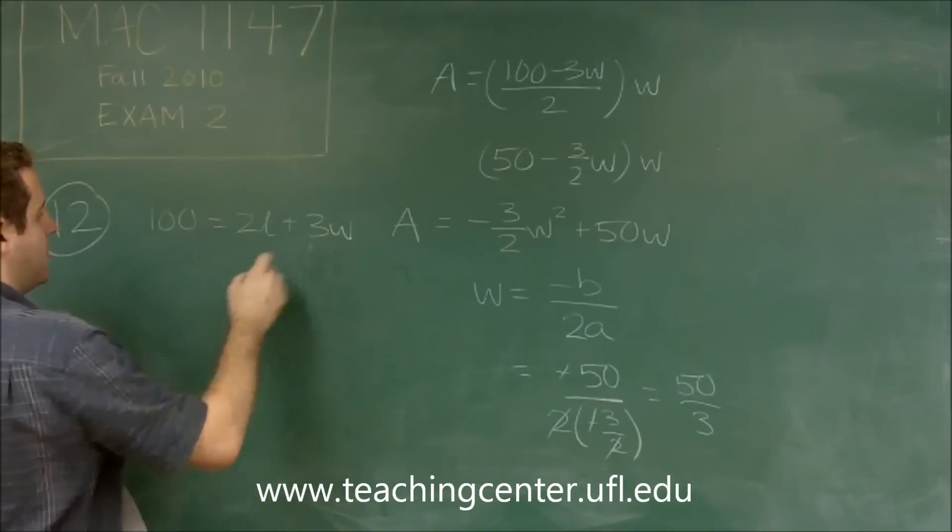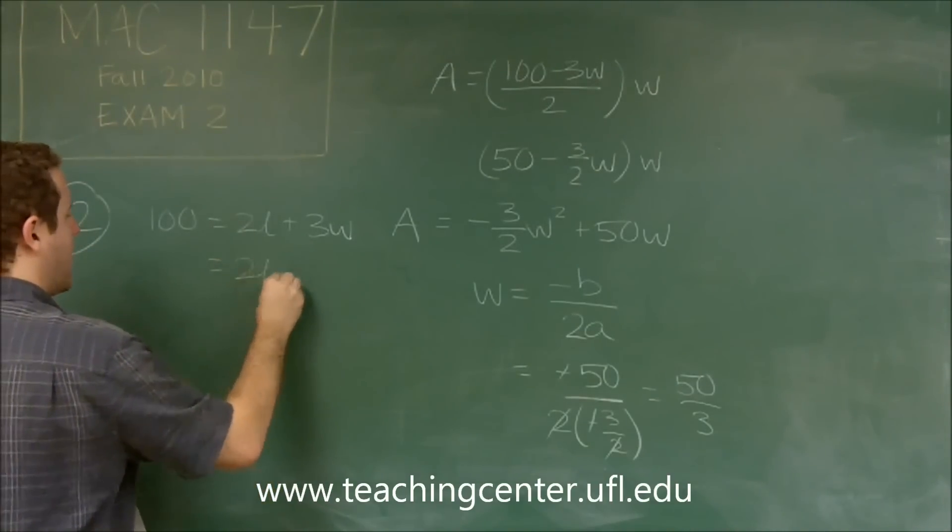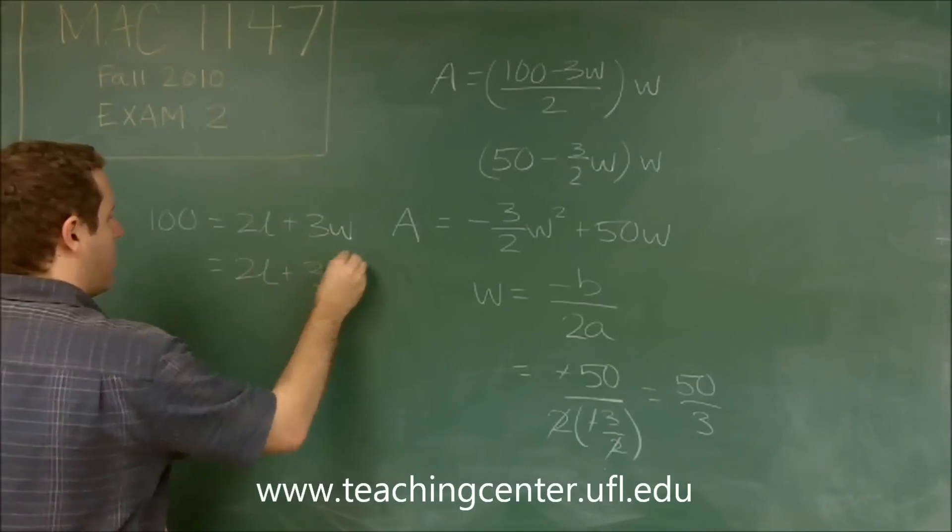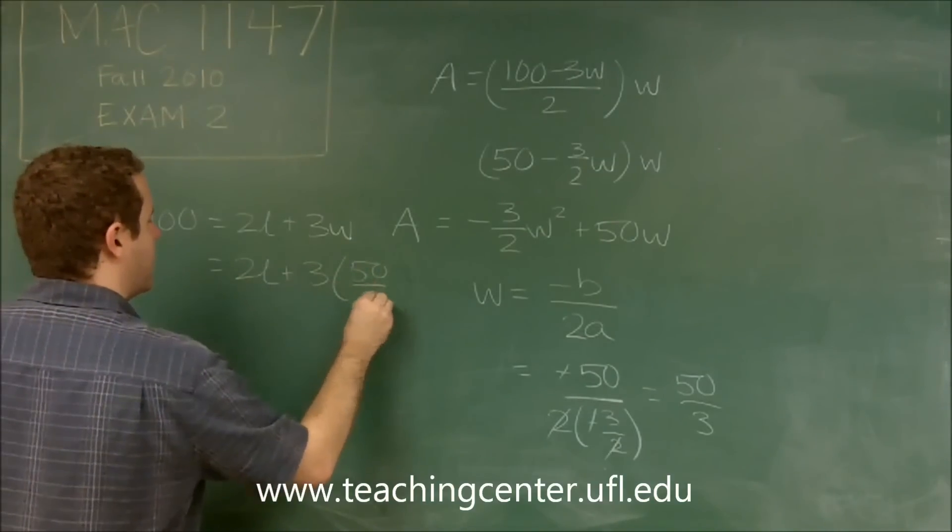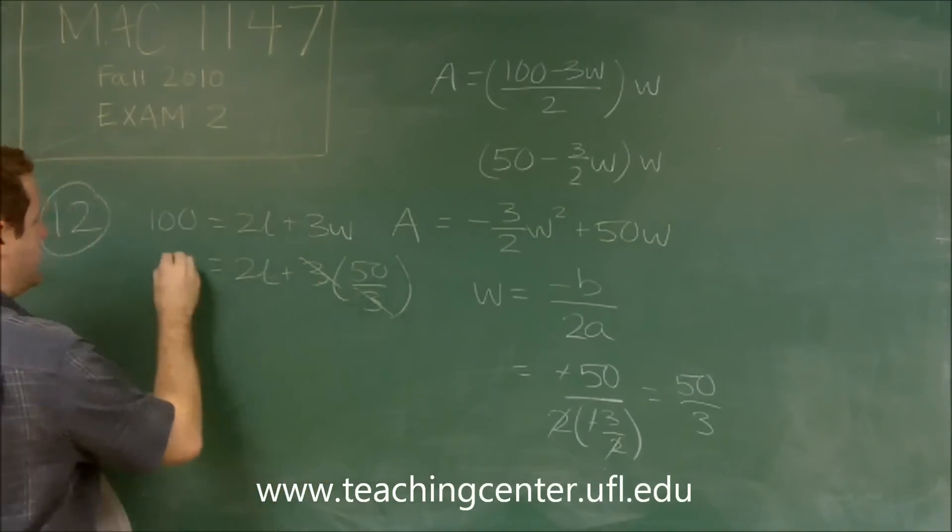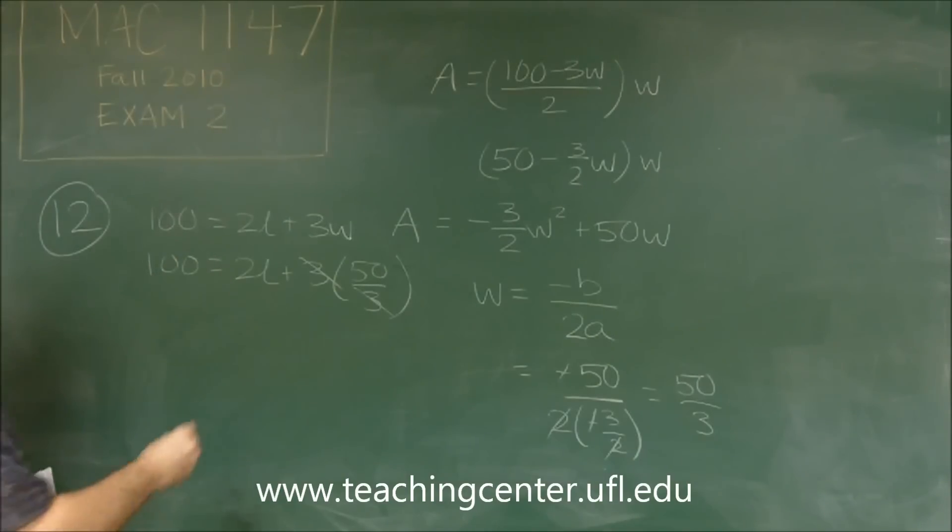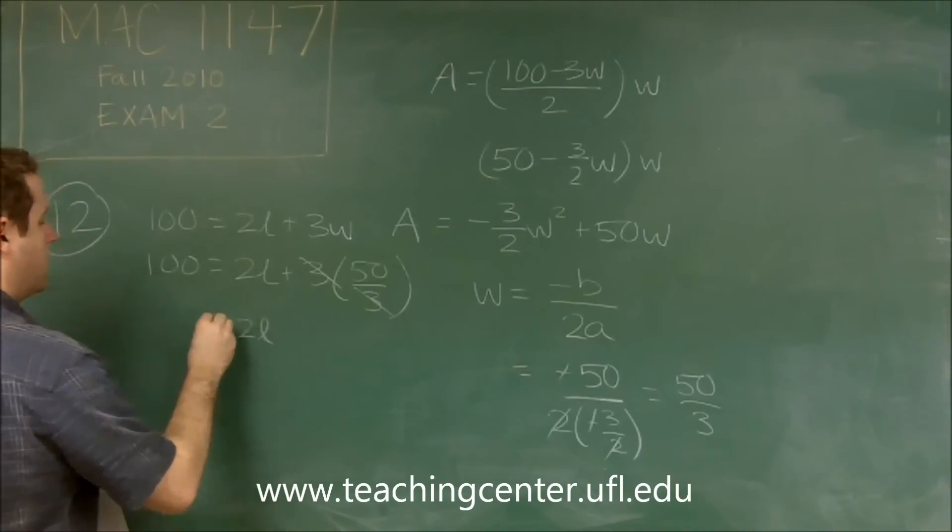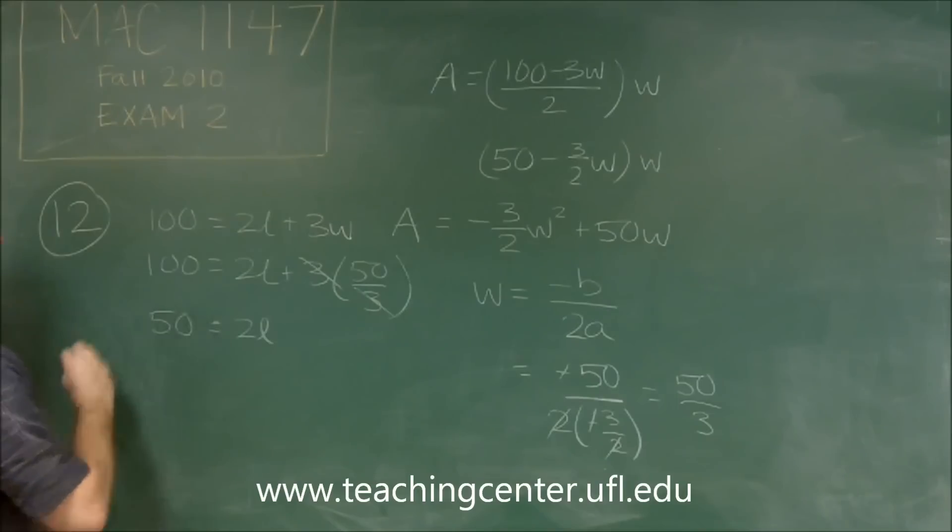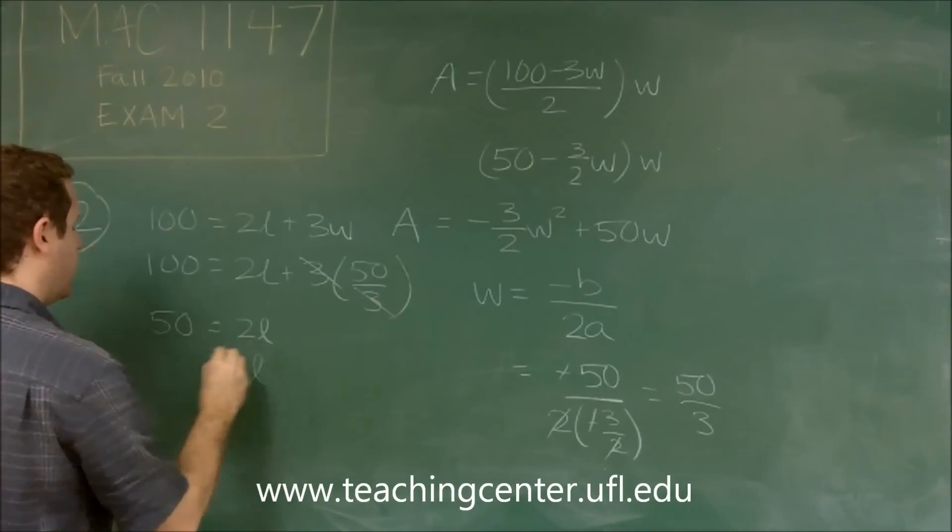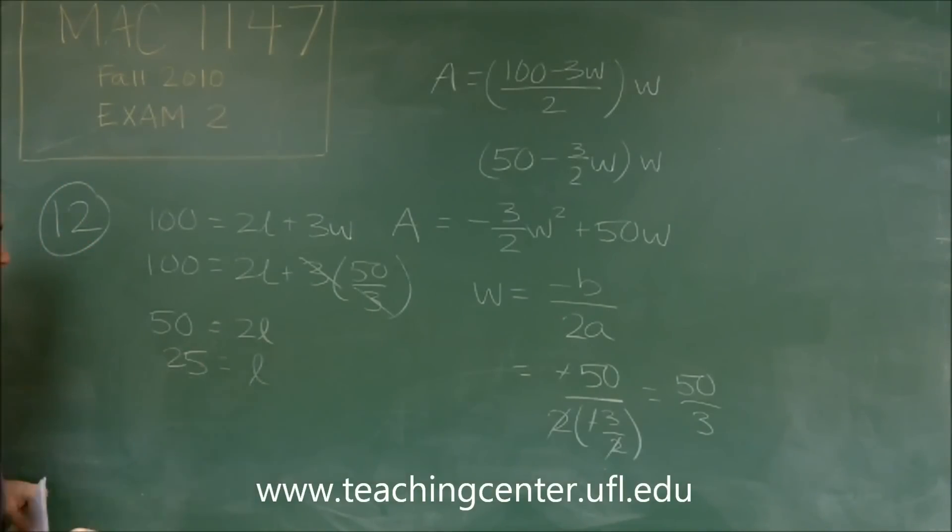Well, by plugging in 50 over 3, 3 times 50 over 3 is just 50. So we get that 2L has to equal 50, which means L equals 25.